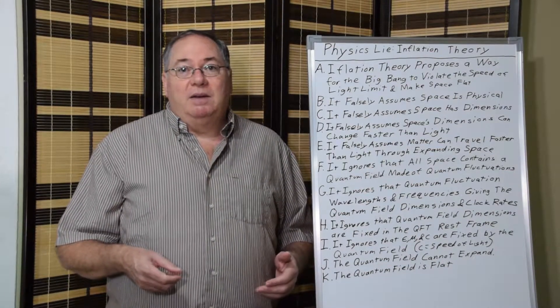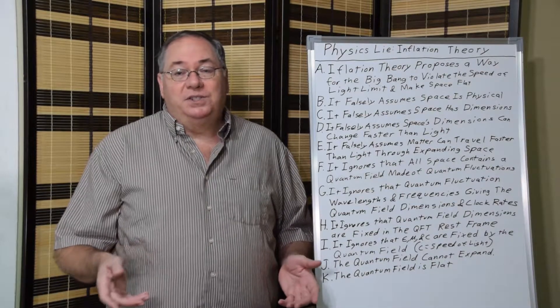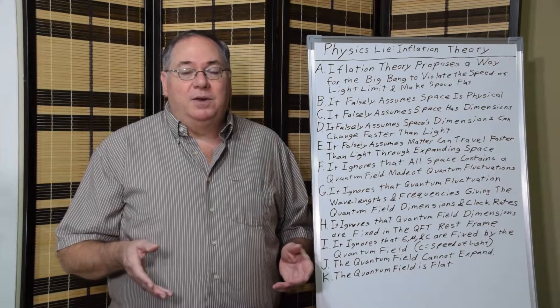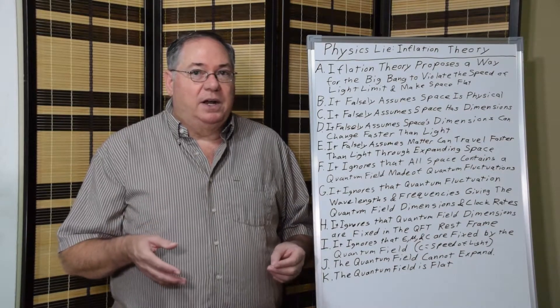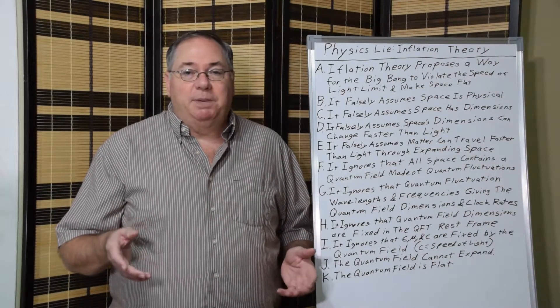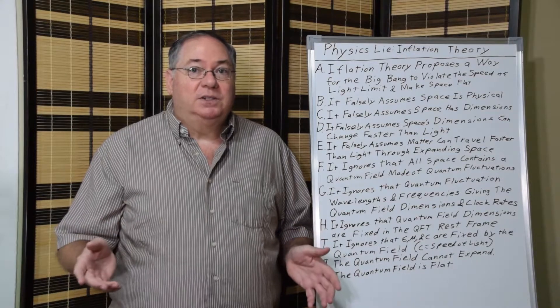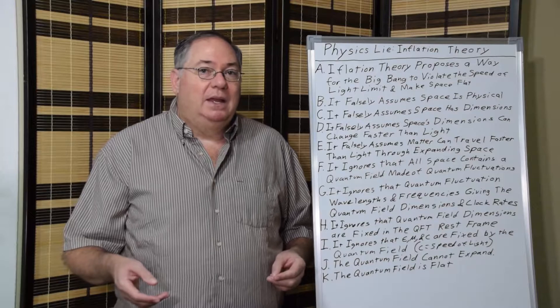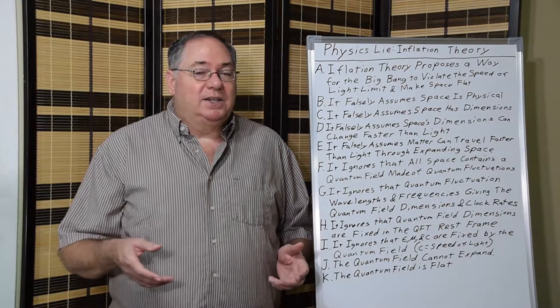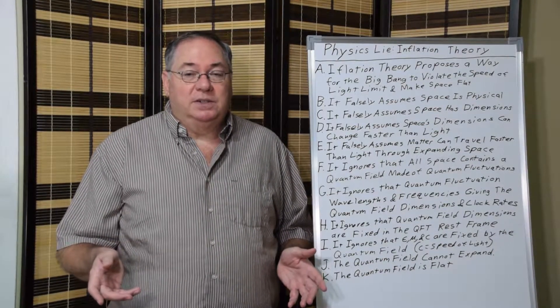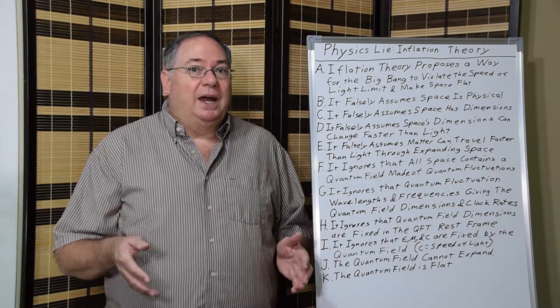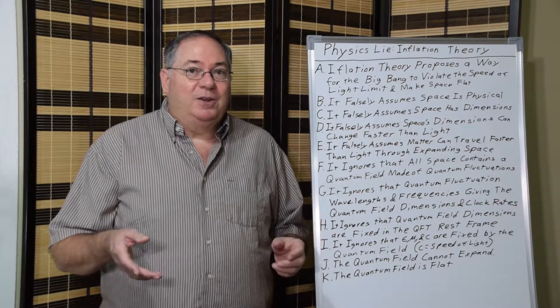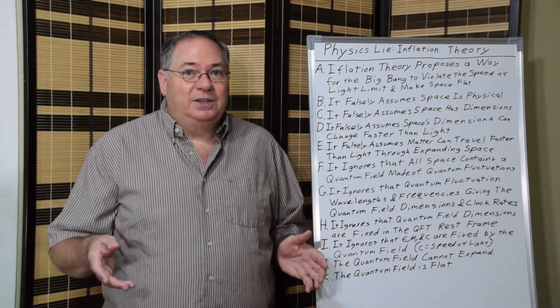There's also a flatness problem. The universe is geometrically flat. Based on a Big Bang model with everything starting at a point, it would be expected that space would have curvature to it under Einstein's model of space curving. And space doesn't have nearly as much curvature as they thought.